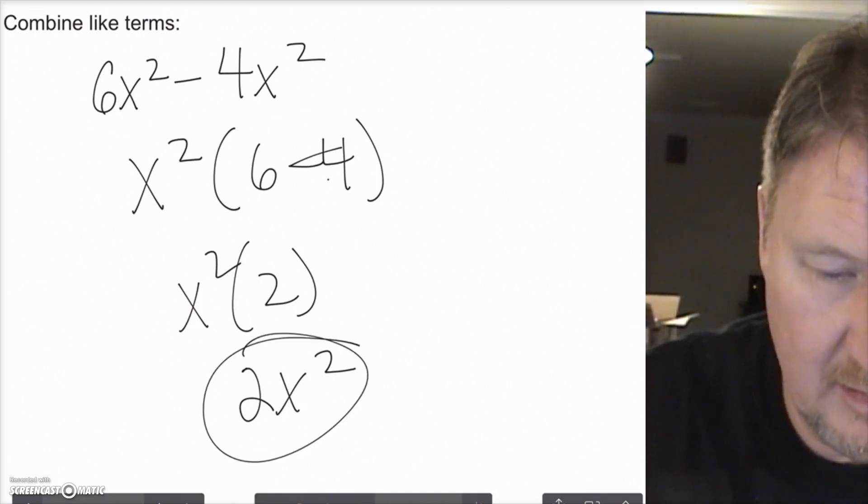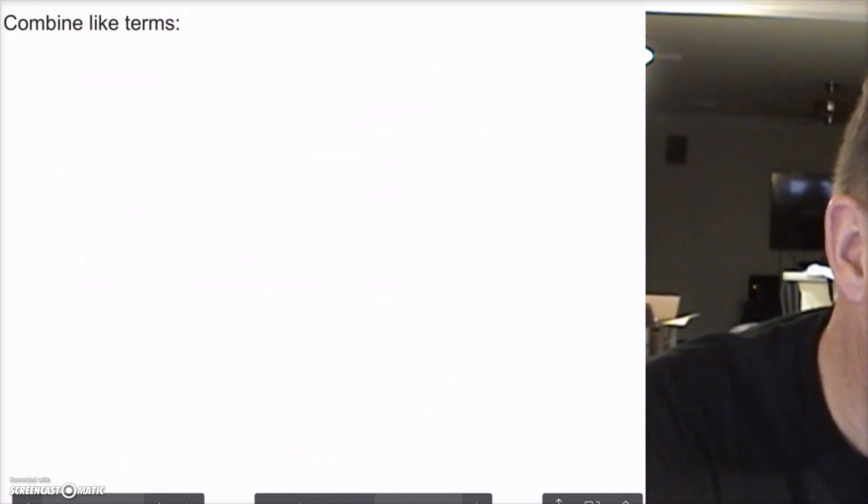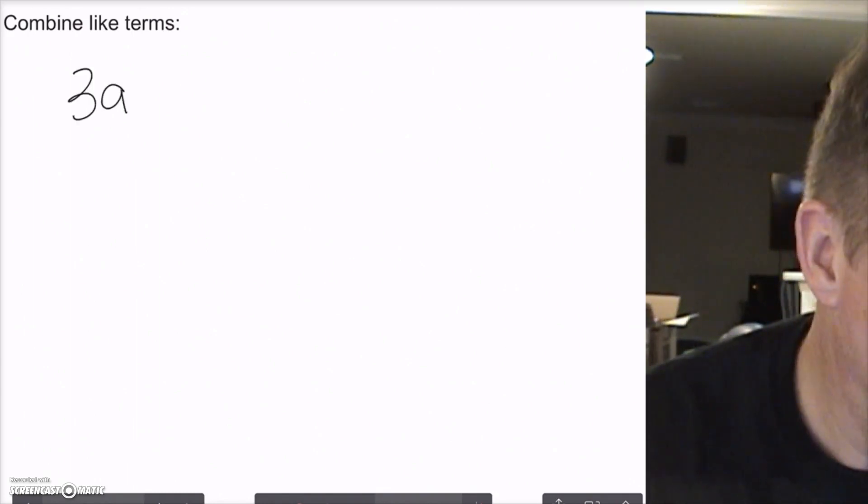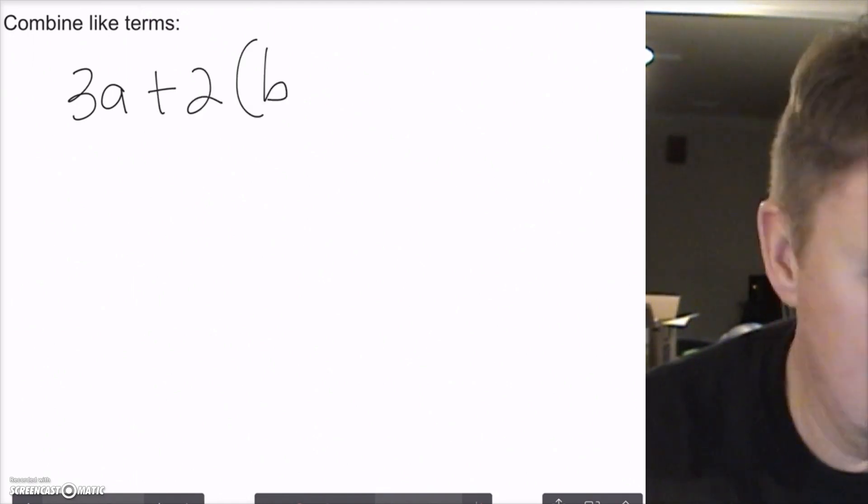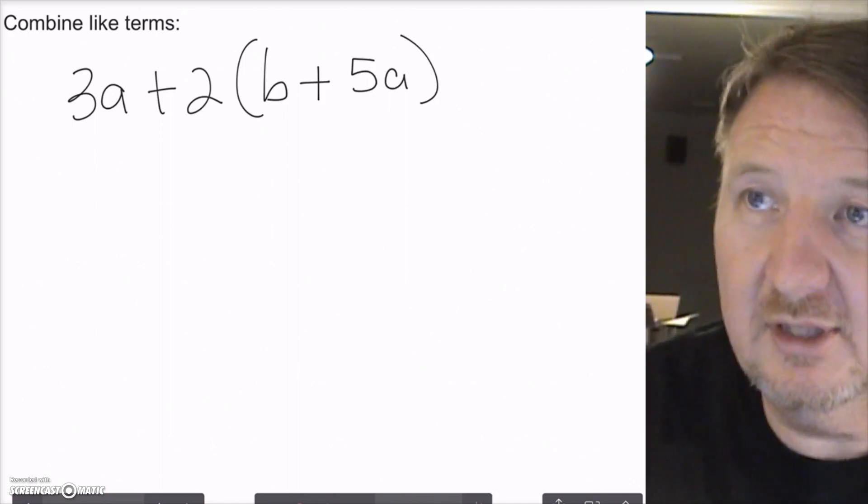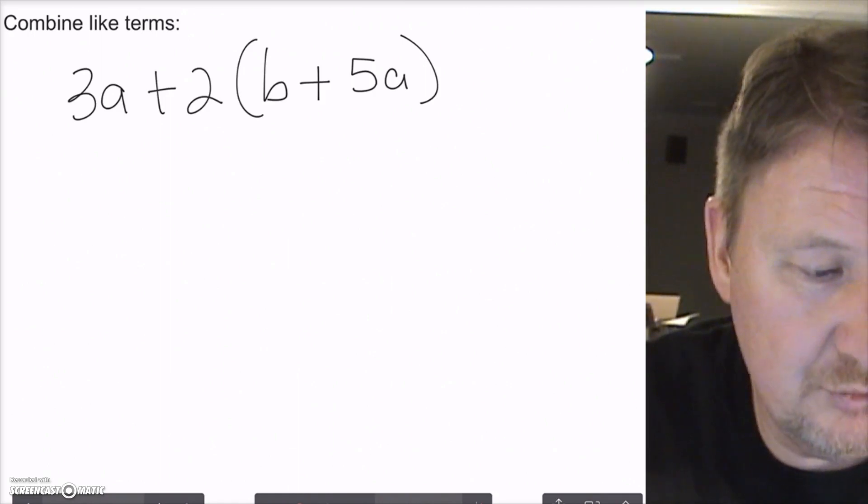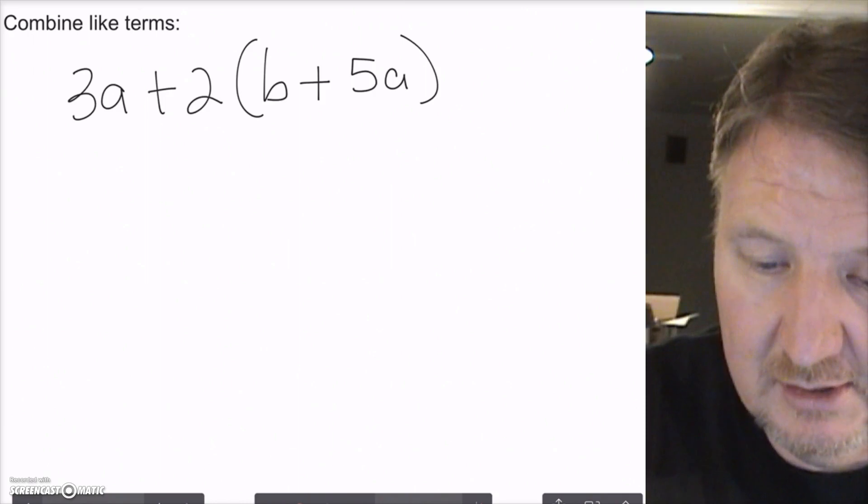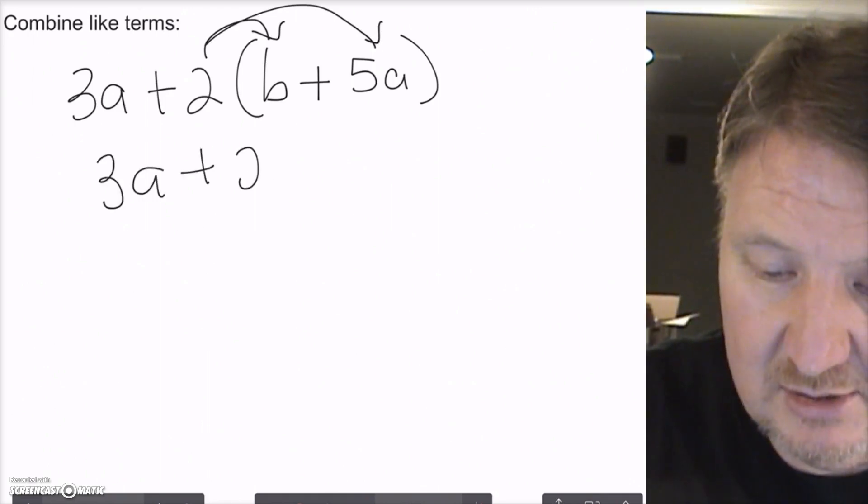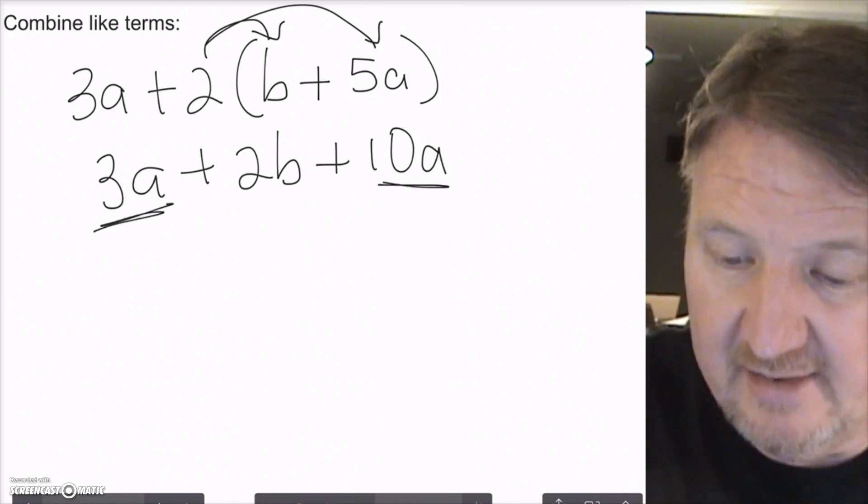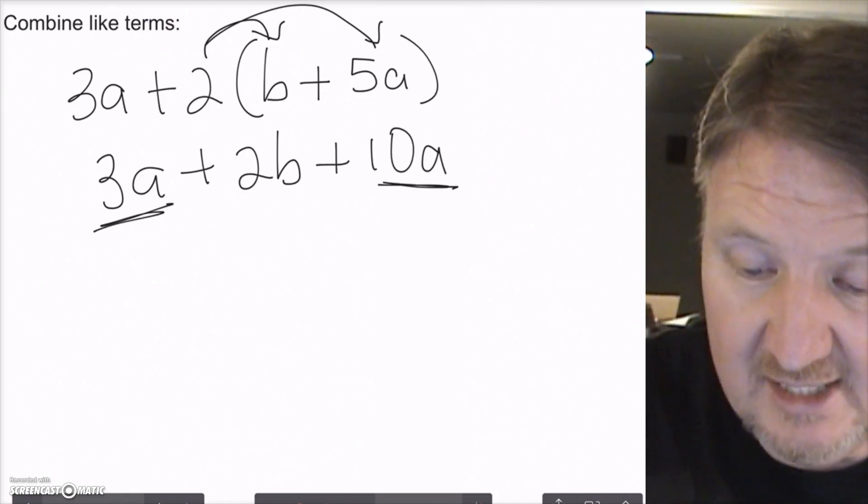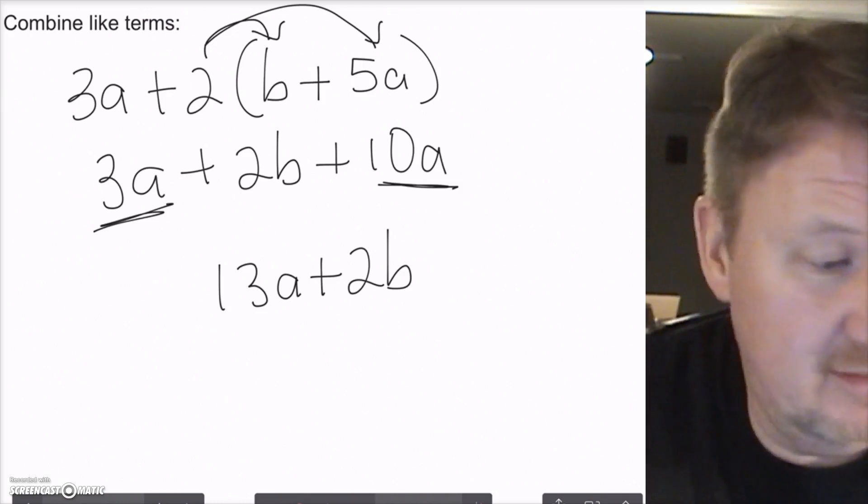Let's look at another one real quick. I have 3a plus 2 times b plus 5a. Now, we're not looking to answer this. We're just looking to simplify it and get it to a simple term. So, first thing I might want to do is go ahead and use the distributive property to distribute the 2 to both of these terms. So, I'll have 3a plus 2 times b is 2b plus 2 times 5a would be 10a. So, then I look for my like terms. I have an a term here and I have an a term here, and it's all addition. So, I say 3 plus 10 would be 13a plus 2b. And that's it. I don't have any b terms, so I can't combine it with anything else. And that's it.